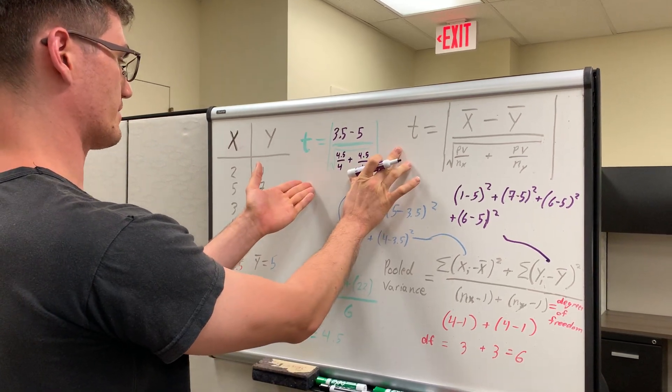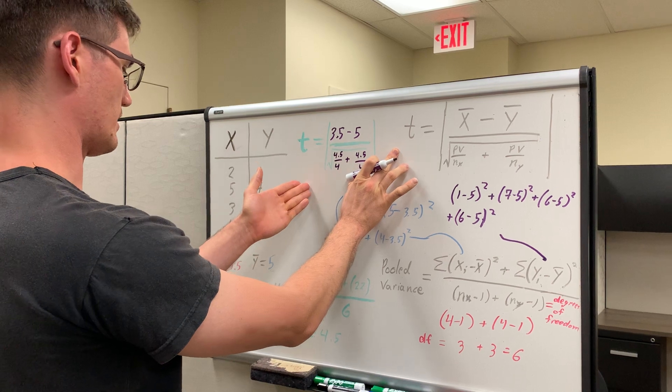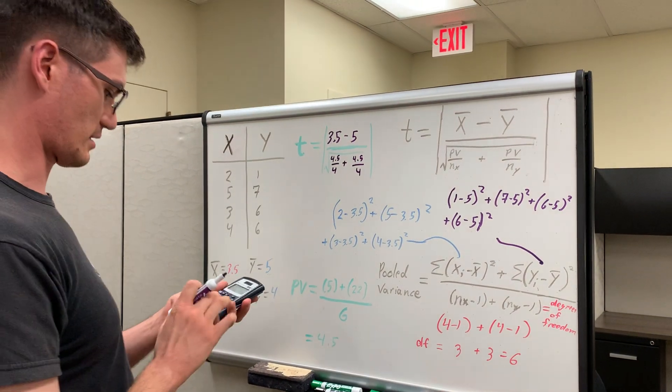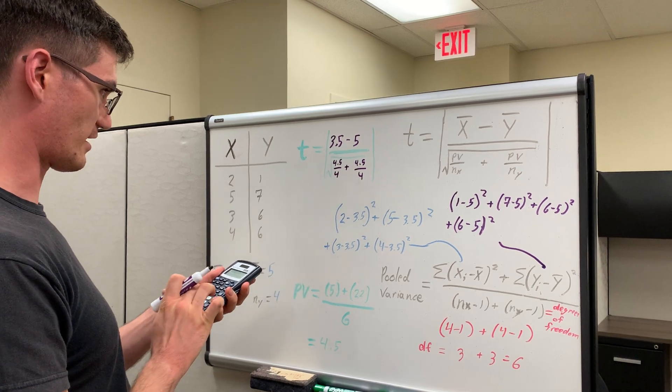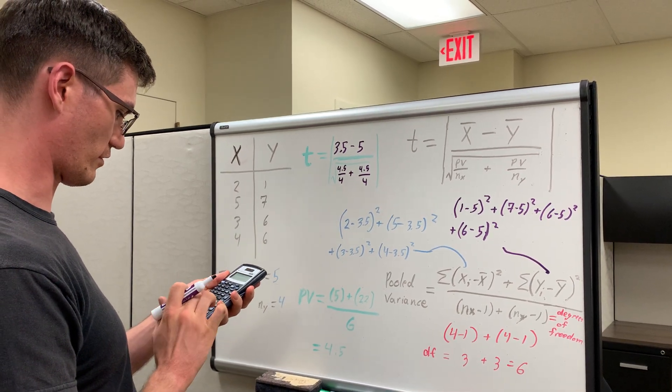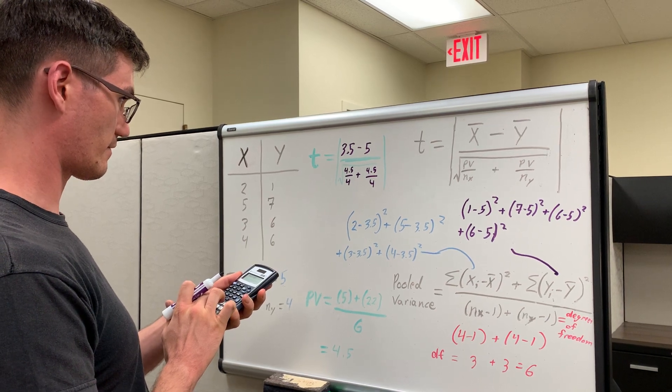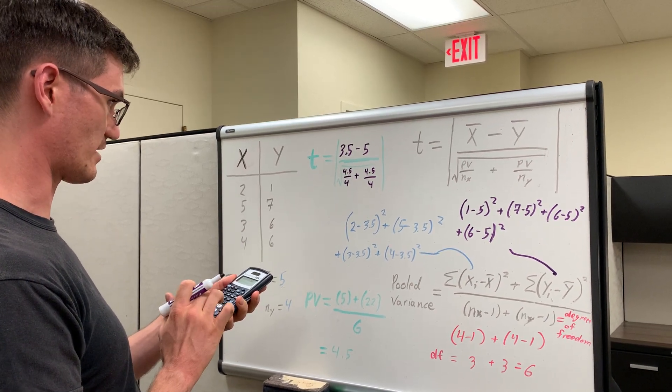And then you have your main treatment. And if I calculate those numbers, say we have 4.5 divided by 4 plus 4.5 divided by 4 again.